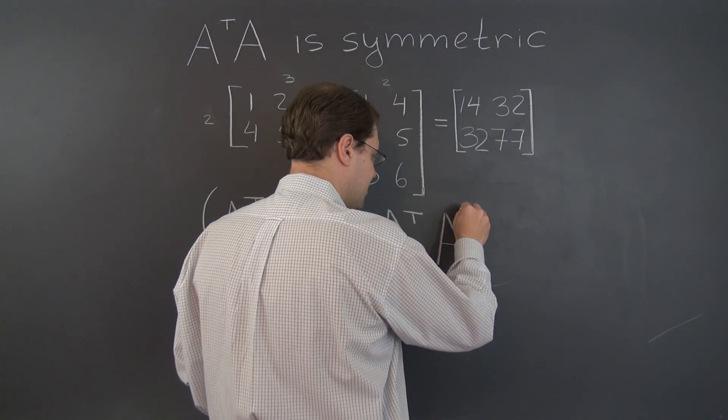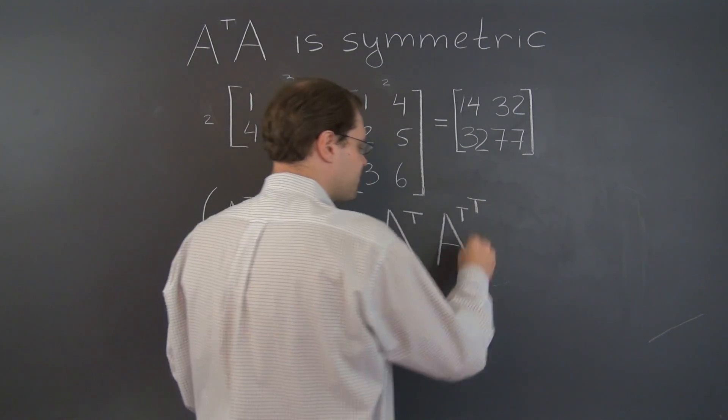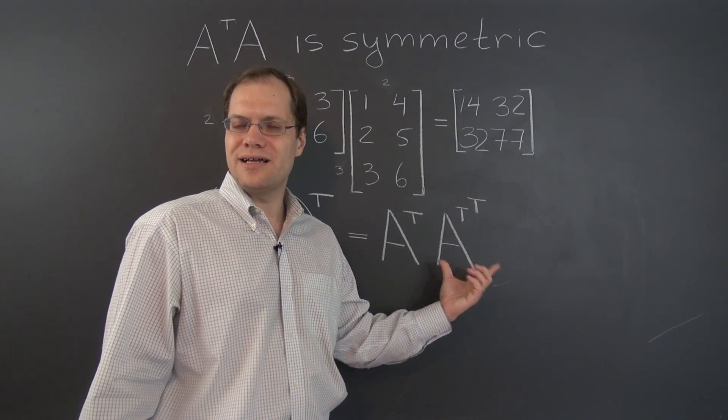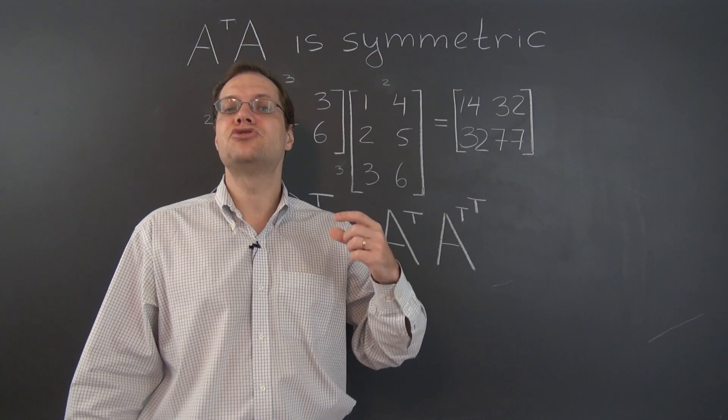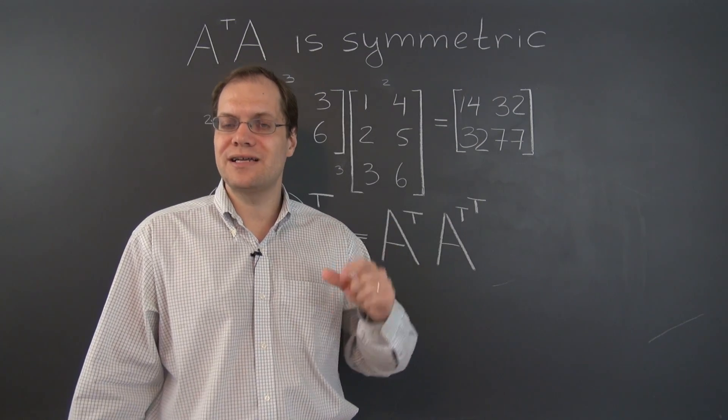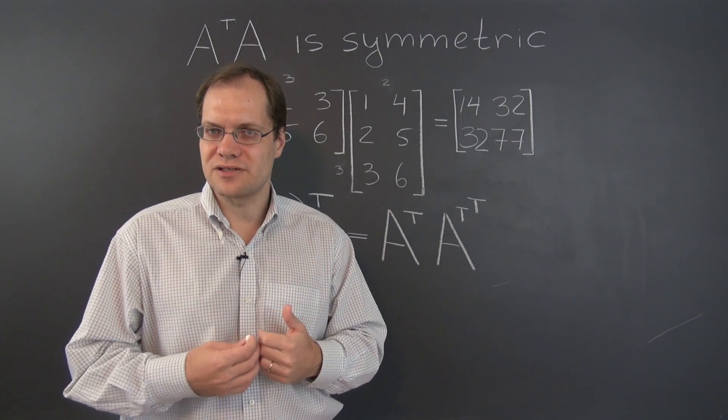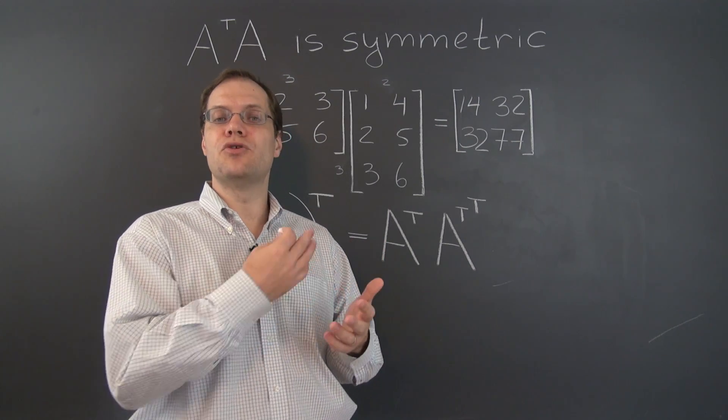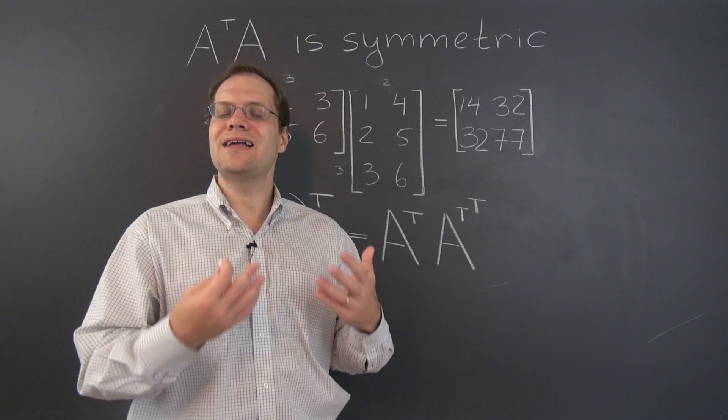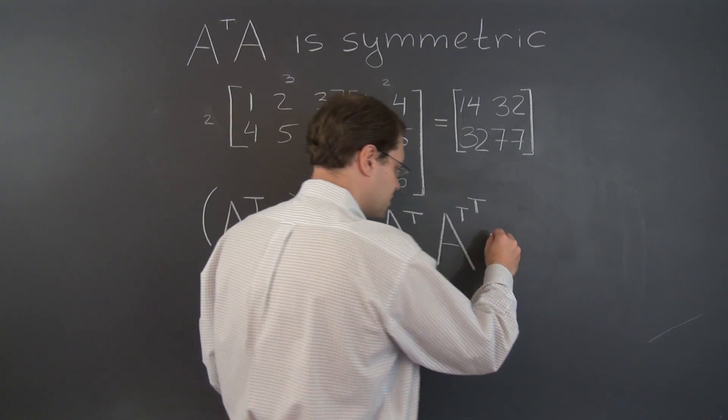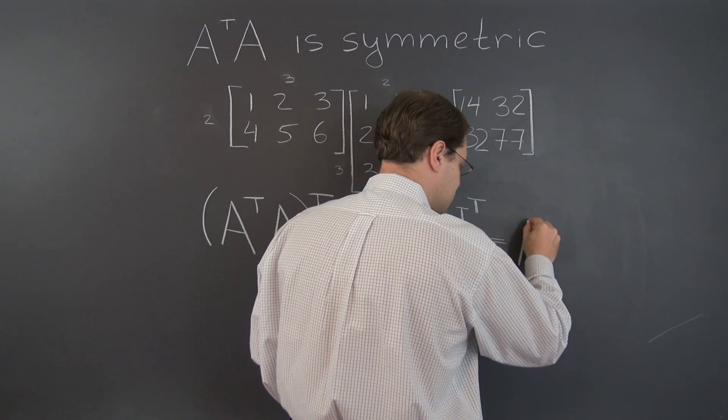It's the transpose of the transpose itself. And it's not hard to realize that if you take a matrix and transpose it twice, transpose it and then transpose the result, you will end up with the original matrix. Because after the first step the rows have become the columns, and after the second step the columns went back to being the rows.